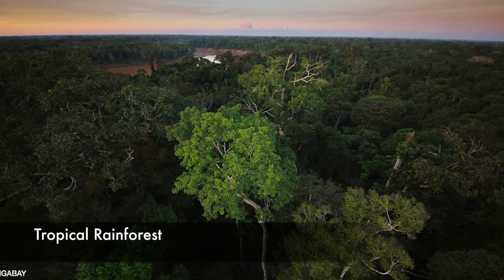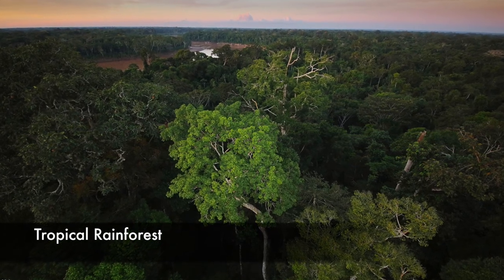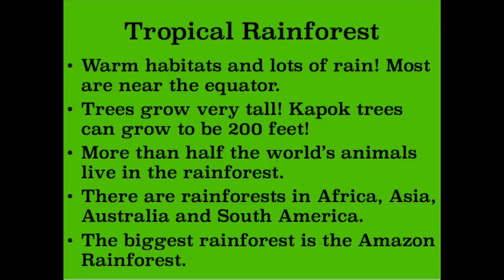Let's start with tropical rainforests. These are warm habitats that have lots of rain. The reason for this is because most tropical rainforests are located near the equator. The trees here grow very tall — for example, the kapok tree can grow to be 200 feet. More than half the world's animals live in the rainforests. There are rainforests in Africa, Asia, Australia, and South America. The biggest rainforest is the Amazon rainforest.